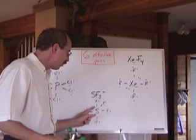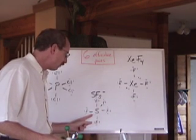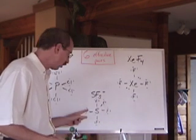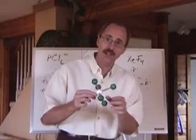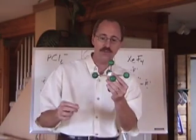S is going to have one, two, three, four, five with the lone pairs, six effective pairs around it when you do the Lewis diagram. So that's going to be octahedral, but you need a lone pair in there. Where's the lone pair going to go?